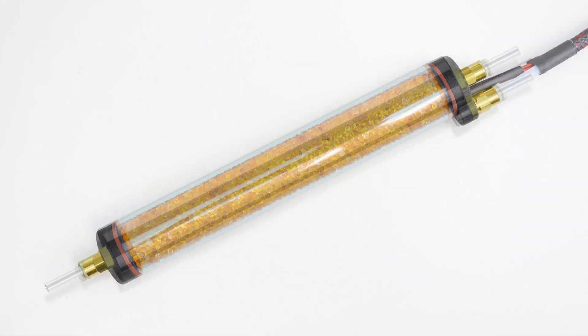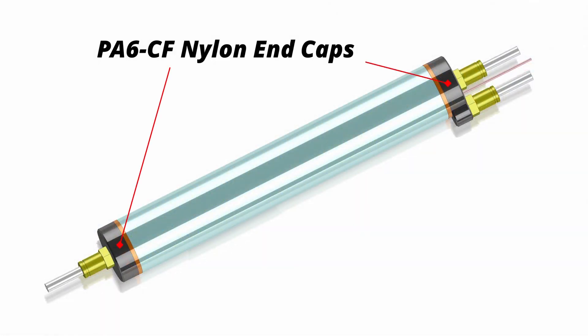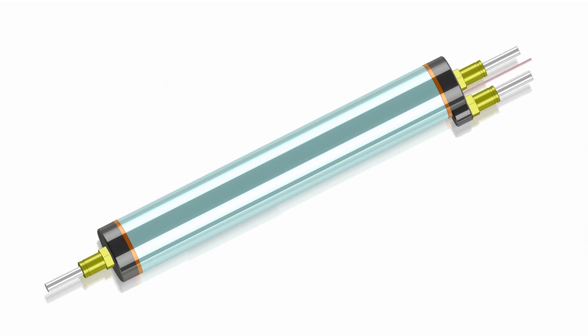The end caps are 3D printed with PA6 CF and annealed for maximum heat deflection and strength. The overall length is 170 millimeters. The drying chamber length is 150 millimeters, 50% longer than our current EX model.